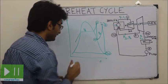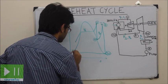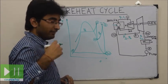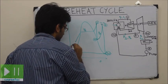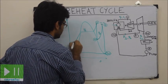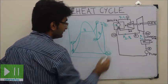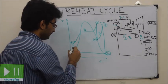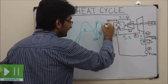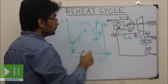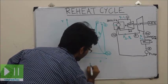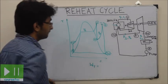At point 5, the steam is sent to the pump. The process 5 to 6S represents pumping to pressure P1. The work done by the turbine — from 1 to 2S and from 3 to 4S — is Wt, which equals (H1 − H2S) + (H3 − H4S). The work done by the pump, Wp, equals H6S − H5.